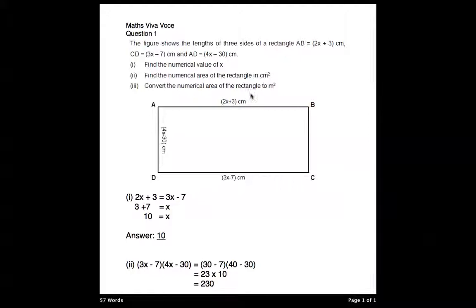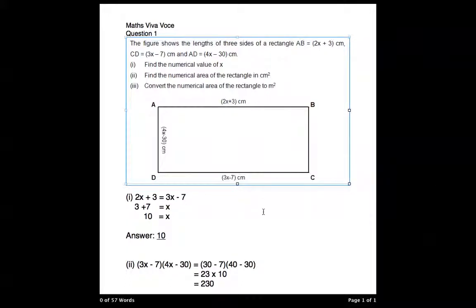When we look at this diagram, we know that AB is the same as DC because they are a rectangle. So 2x plus 3 equals 3x minus 7 because they are of the same length.